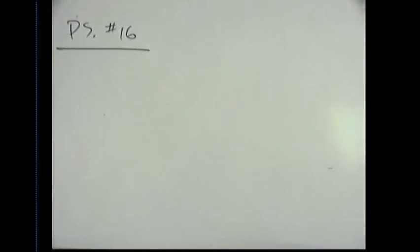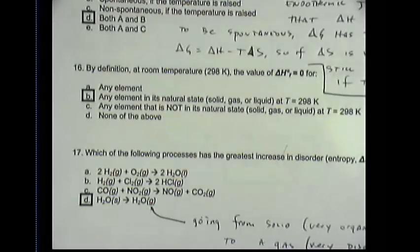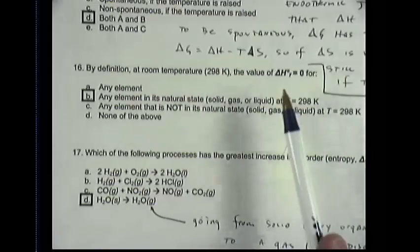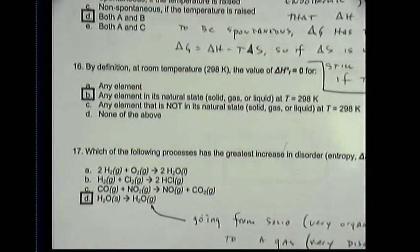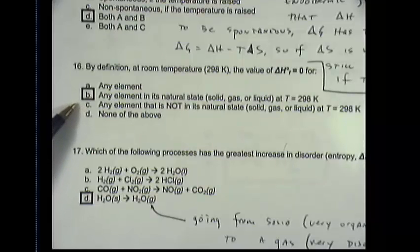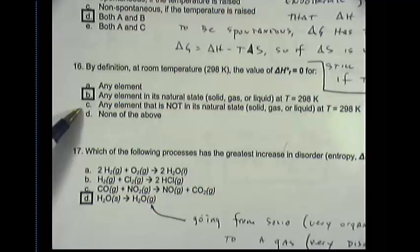Another problem that I want to address is problem number 16 from our problem set. It says, by definition, at room temperature, which is 298 Kelvin, the value of the enthalpy of formation equals 0 for what? Any element? Any element in its natural physical state, solid gas or liquid? Any element that is not in its natural state, or none of the above? Well, obviously, the answer is highlighted there, so you can see that.